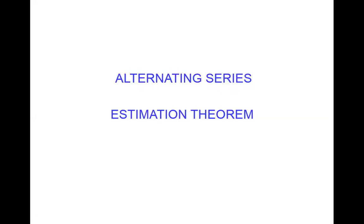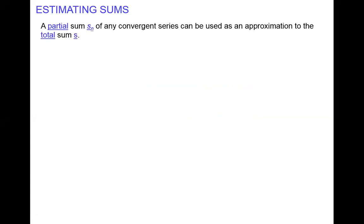In this video I am going to discuss the alternating series estimation theorem. We are estimating a sum. What we can do is compute a partial sum of a convergent alternating series, and we can use this partial sum to approximate the entire sum, the total sum S.